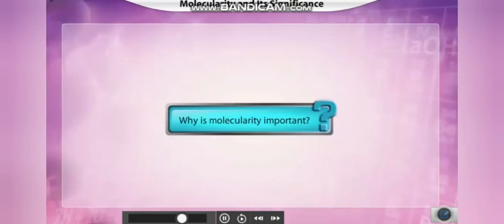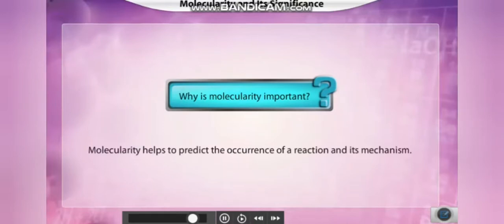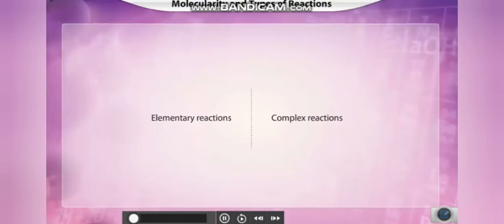But why is it important to know the molecularity of a reaction? Molecularity helps to predict the occurrence of a reaction and its mechanism. According to the course of a reaction, reactions can be of two types: elementary reactions or complex reactions.